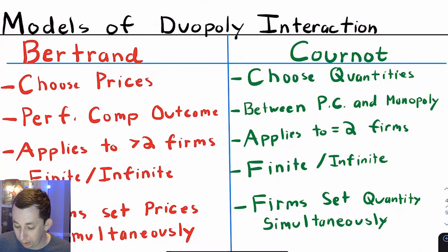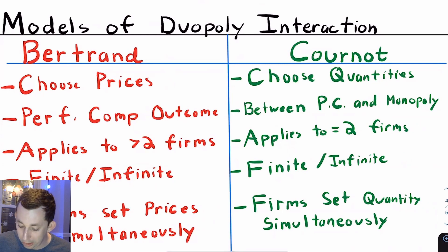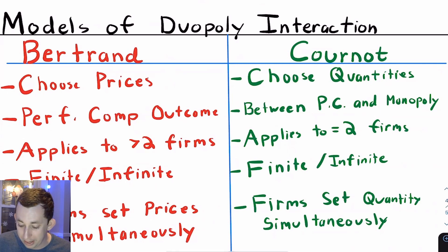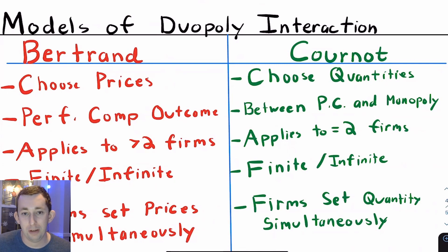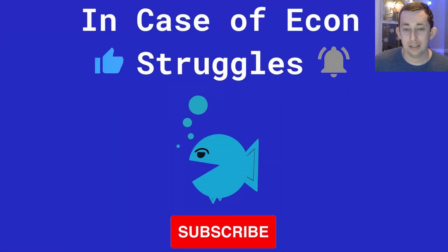Contrast that with the Cournot model, where the firms are setting quantity simultaneously in the market. Again, you can have a finite or infinite version — we'll talk about each of those. The Cournot model really only applies to two firms, and the quantity and price that you get is somewhere between perfectly competitive and monopoly, which is what you might expect given that the number of firms in the market is somewhere between perfect competition and monopoly. In the Cournot model, you're choosing quantities. Hopefully this gives you a general sense of how a duopoly slash oligopoly market works.